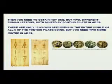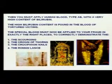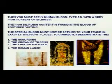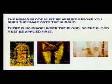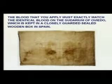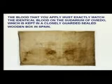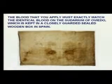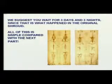Finding two more coins minted in AD 29 will be quite difficult. Then you've got to apply human blood type AB with a very high content of bilirubin — because when victims are tortured, as happened during the crucifixion, there's a high bilirubin content in the blood. The special blood must be applied to your fraudulent cloth in exactly the right places to correctly demonstrate the scourging, the crown of thorns, the crucifixion nails, and the Roman lance. You've got to apply the human blood before you burn the image on the shroud — there's no image under the blood, so the blood must be applied first. The blood must exactly match the identical blood on the Sudarium of Oviedo in Spain.